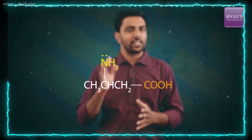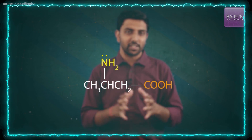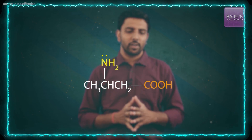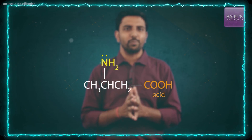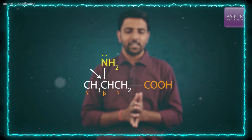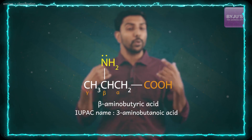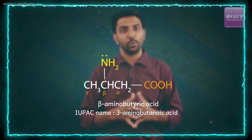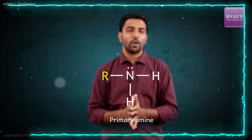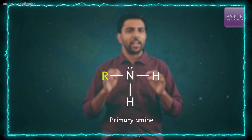As a last and final example, we have this compound. The COOH group is the principal functional group, so it has to be an acid. Since the amino group is on the beta carbon atom, this is beta-amino butyric acid. It is not butanoic acid — it is butyric acid.